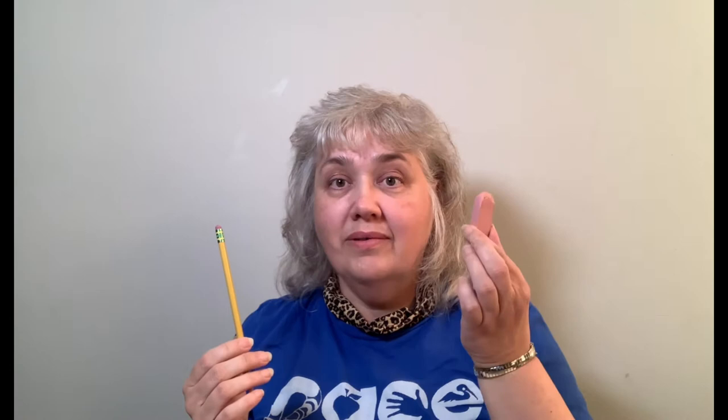Today we're going to use line, color, and shape to illustrate a cross-section of geysers. We're going to need a sheet of paper, pencil, eraser, and a box of crayons.